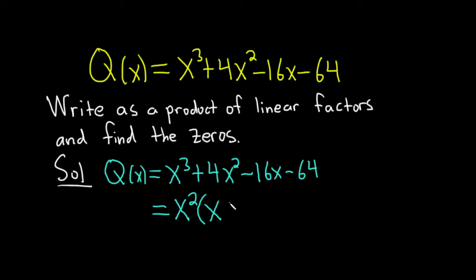And then plus, what do we multiply by x squared in order to get 4x squared? Well, 4. Then we close the parentheses. You should always check: x squared times x is x cubed, x squared times 4 is 4x squared. Good stuff.